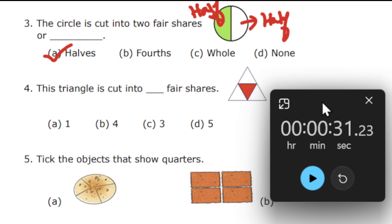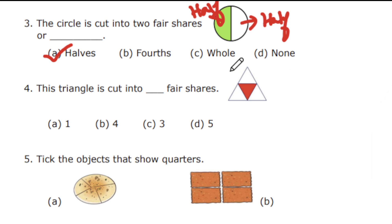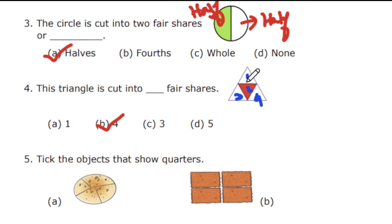30 seconds over. The correct answer is four. Let's count: this one is the first triangle, this one is the second, this one is the third, and this one is the fourth. So one, two, three, and four — these are four equal shares.